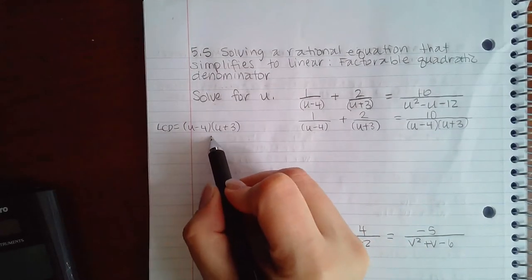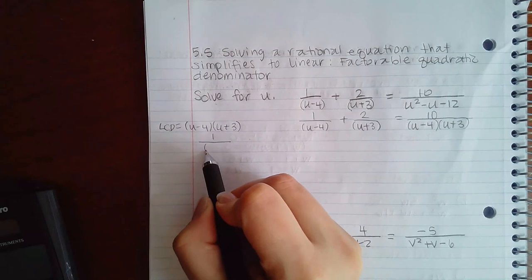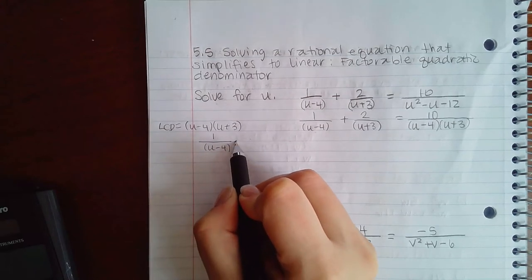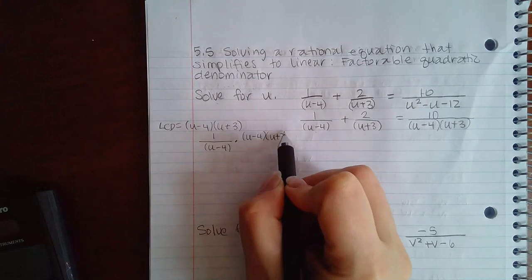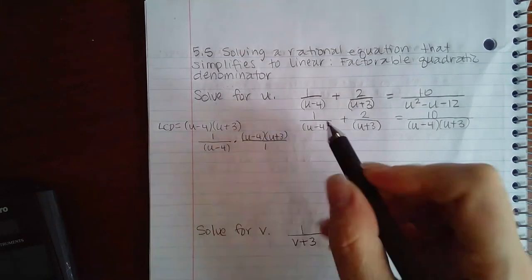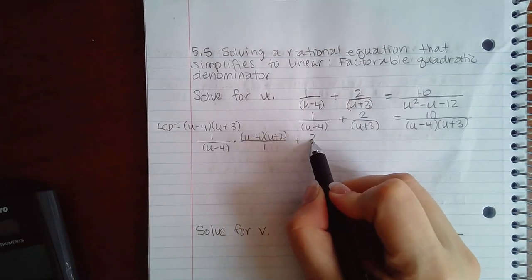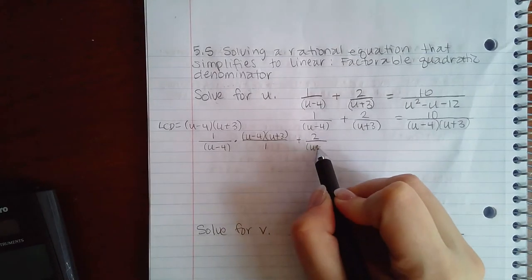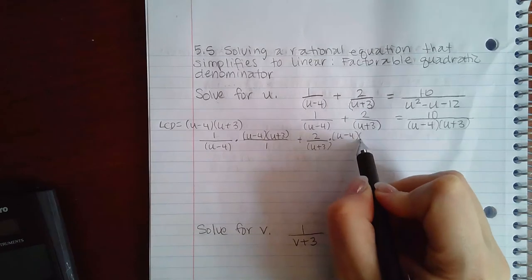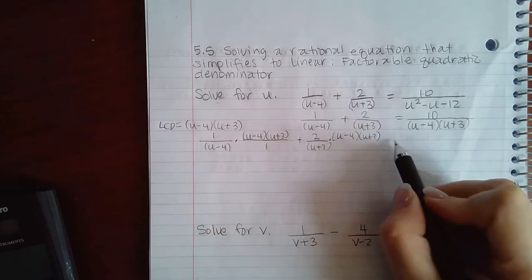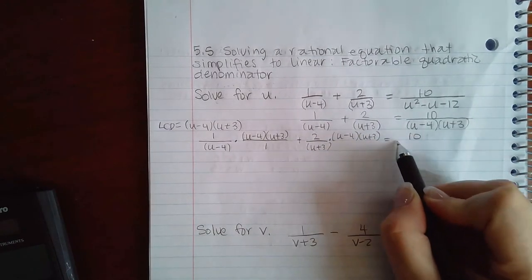How do I solve problems using the LCD? I take the first fraction and I multiply it by this LCD. You can think of it as multiplying it by the LCD over one, and then finally the last fraction.